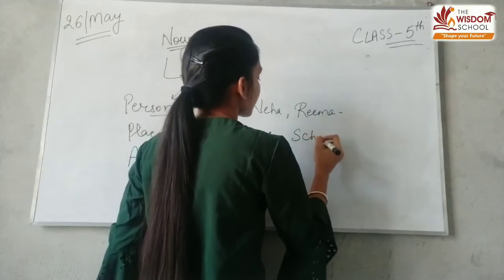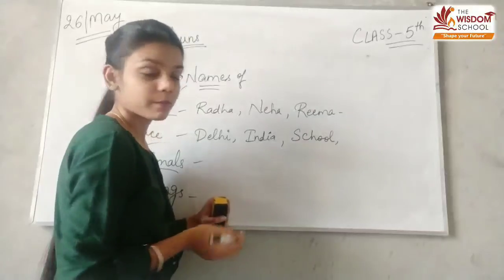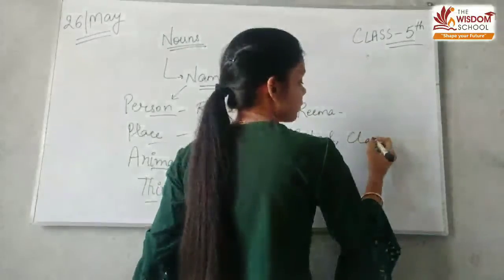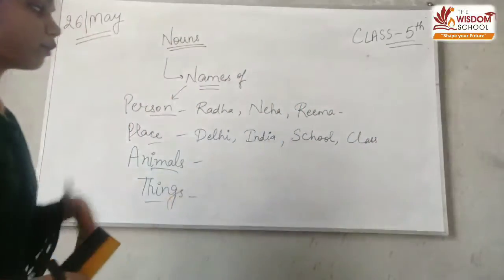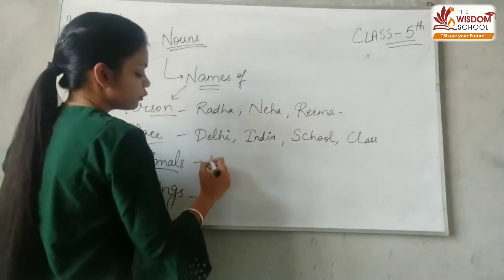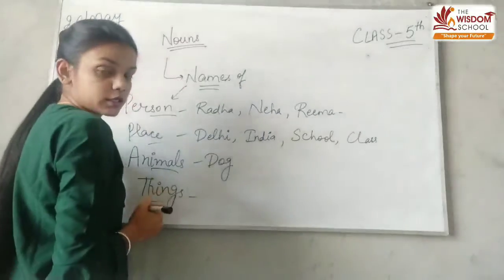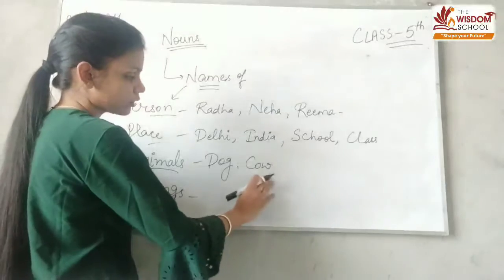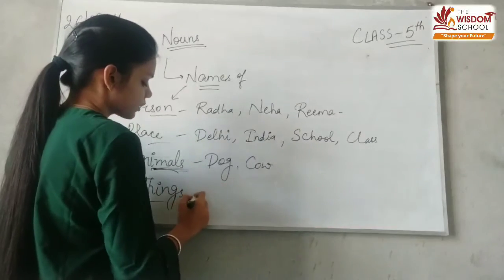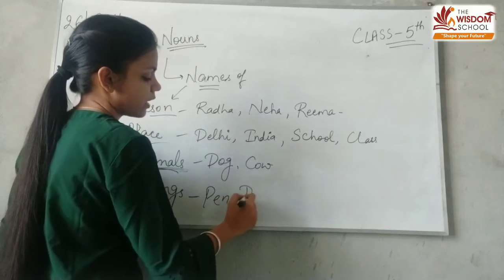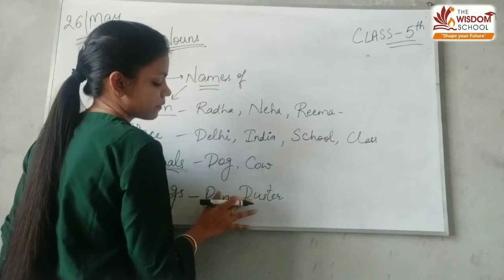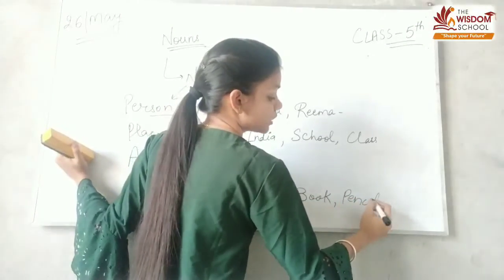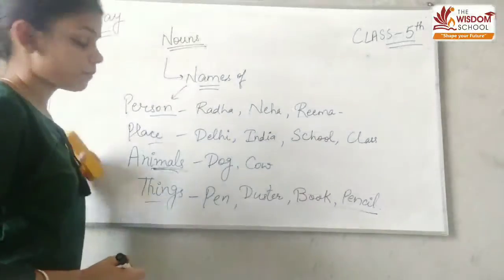Agar main boloon, school jaana hai, toh school kya hai? Name of the place. Classroom mein baithe, study kar rahe ho, toh class kya hai? Name of the place. Animals - if you are having a dog, dog hua. Streets pe dekho toh cow hoti hai. Yeh sare animals hain. Meri haat pe kya hai? Pen hai, duster hai. Aap kahan se padhai kar rahe ho? Books se padhai kar rahe ho, pencil use kar rahe ho, toh yeh sare kya honge? Name of things honge.